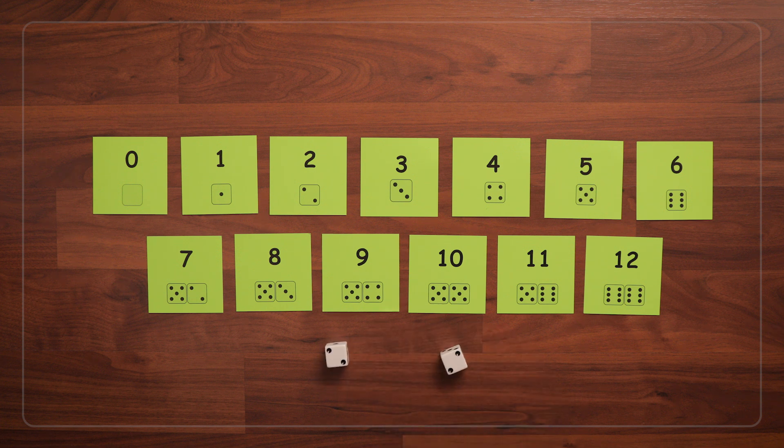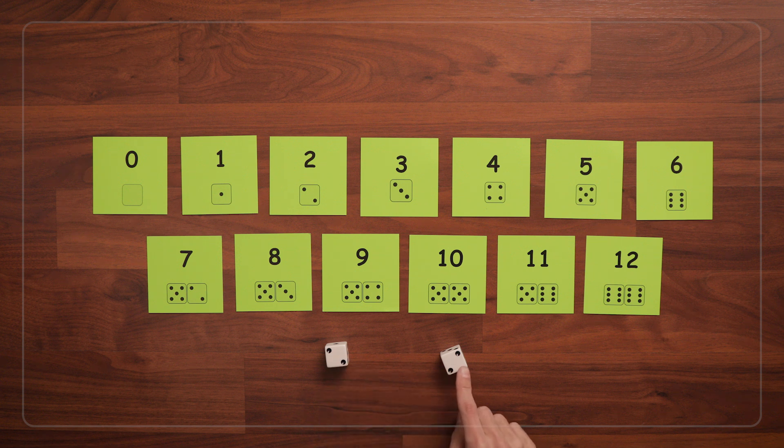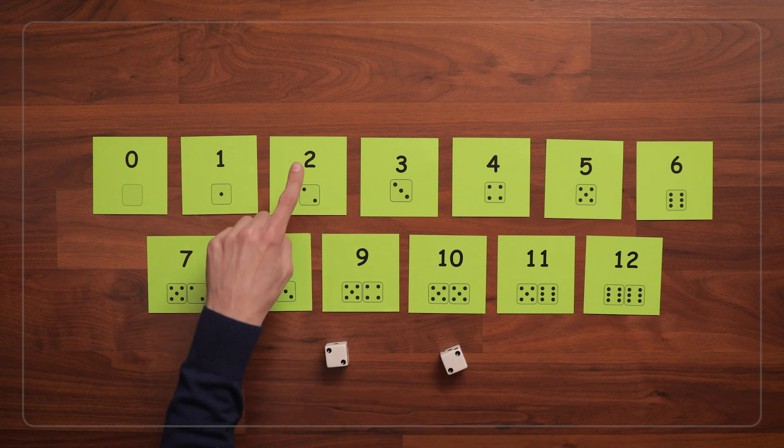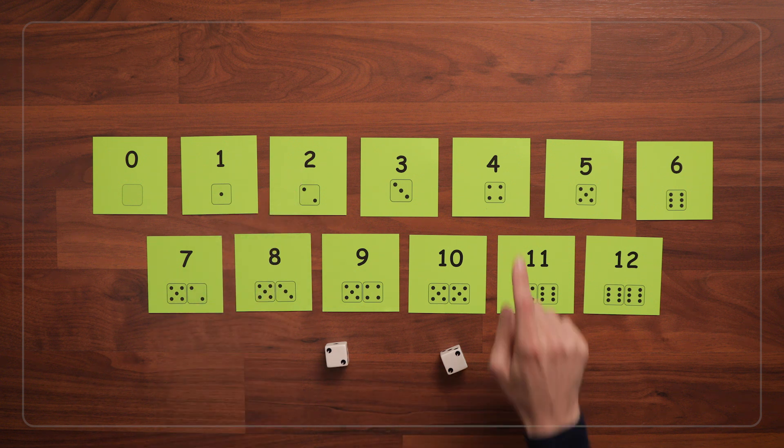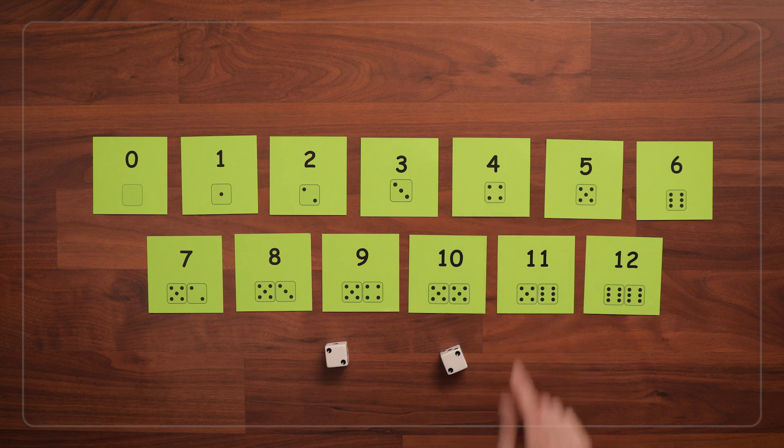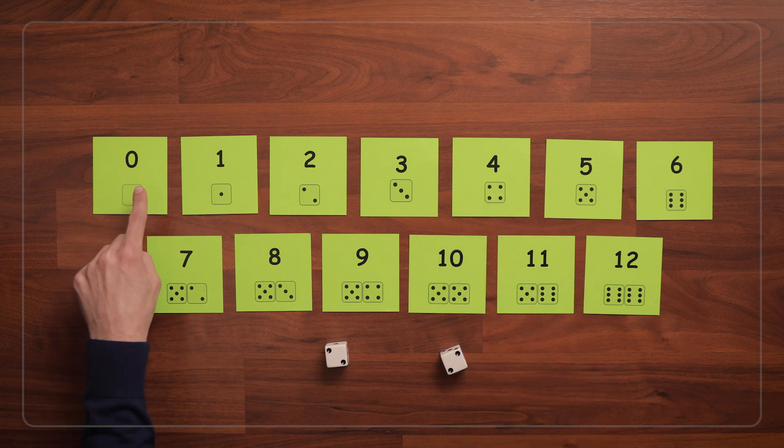So here I roll again, and I get a 2 and a 2. My options are, I could turn over my 2, I could add them together and turn over my 4, or I could subtract them and turn over the 0.